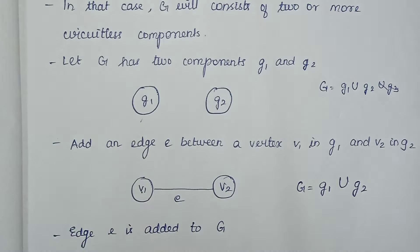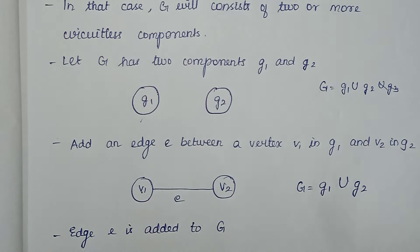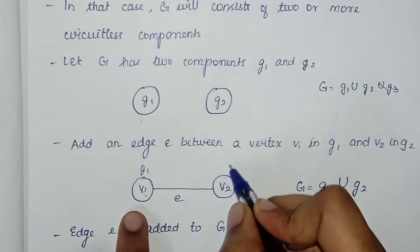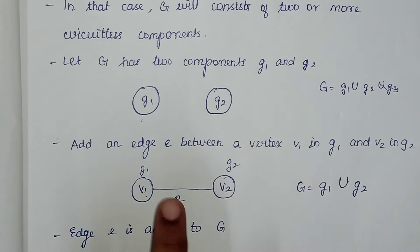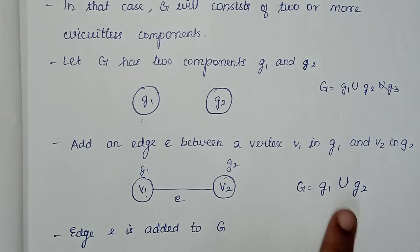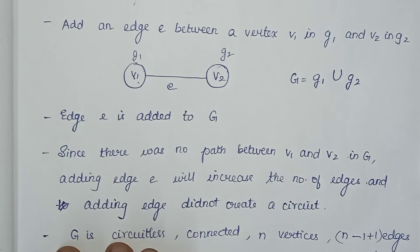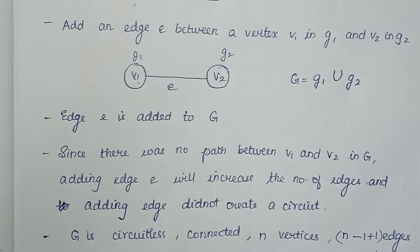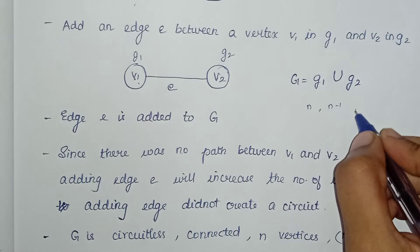Now G1 and G2 are connected. We have another edge. G1 has vertex V1 and G2 has vertex V2. We are going to create a path E between them. So G is equal to G1 union G2. Now if you want to add the edge, you will see the graph has n vertices and n-1 edges with no circuits.